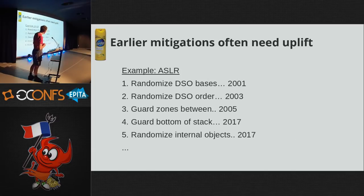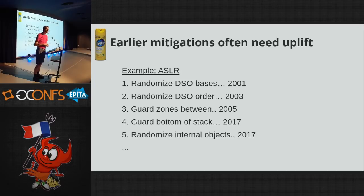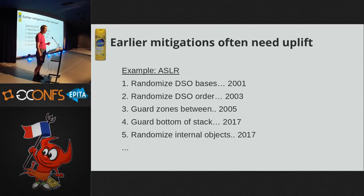ASLR has been in OpenBSD since 2001. First we randomized the base addresses of shared libraries. We recognized pretty soon that since some shared libraries have fairly fixed sizes, the gaps between them still looked familiar. Two years later we randomized the order in which we mapped the shared libraries. In 2005 we put little guard zones in between them. In 2007 someone discovered you could reach off the bottom of the stack, so we added a guard on the bottom of our randomly located stack.